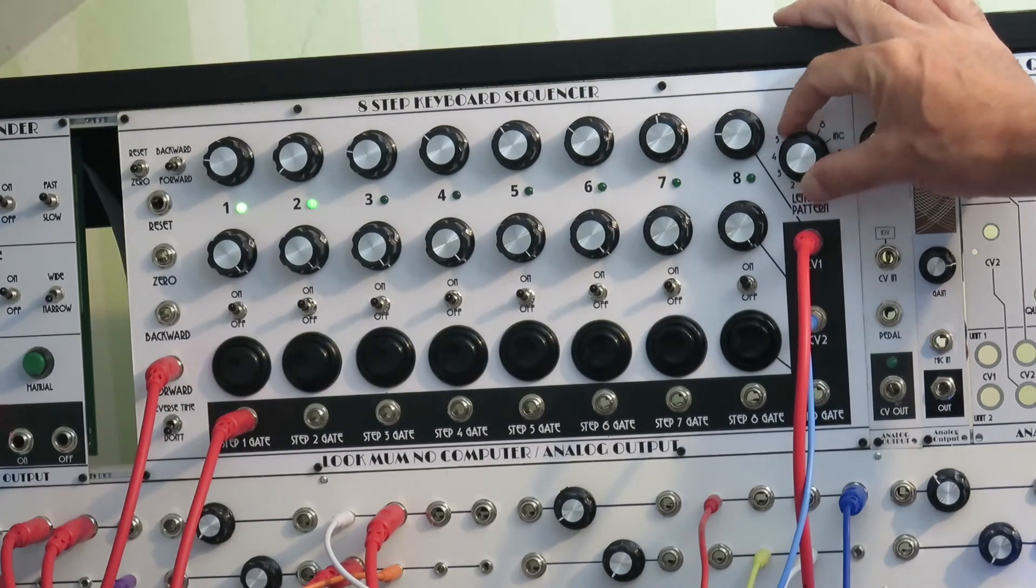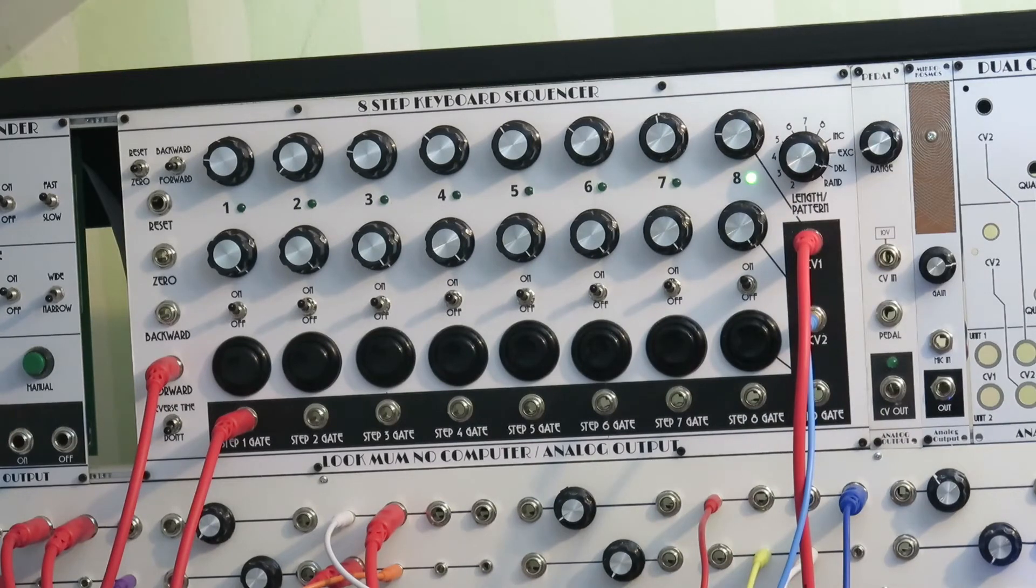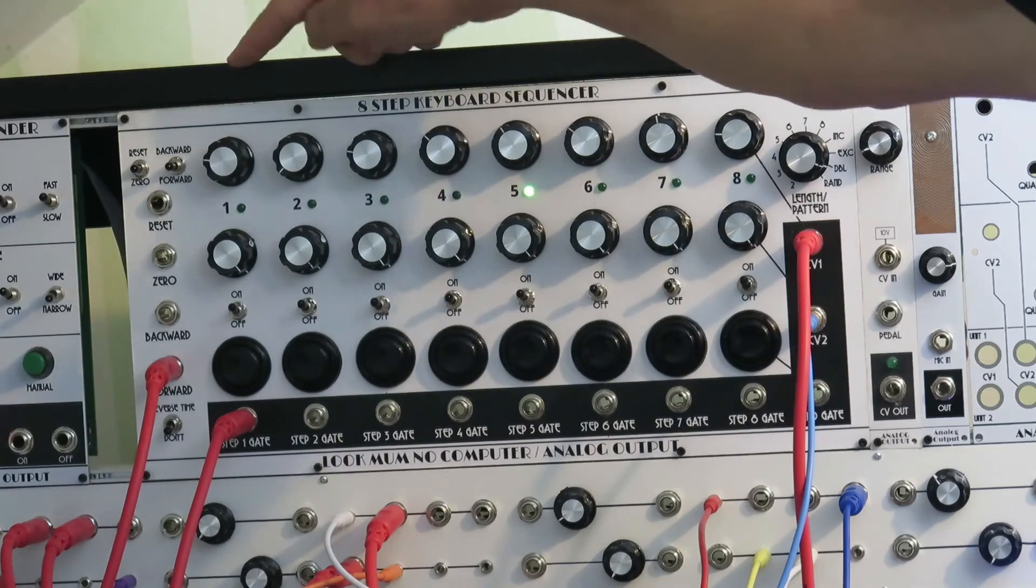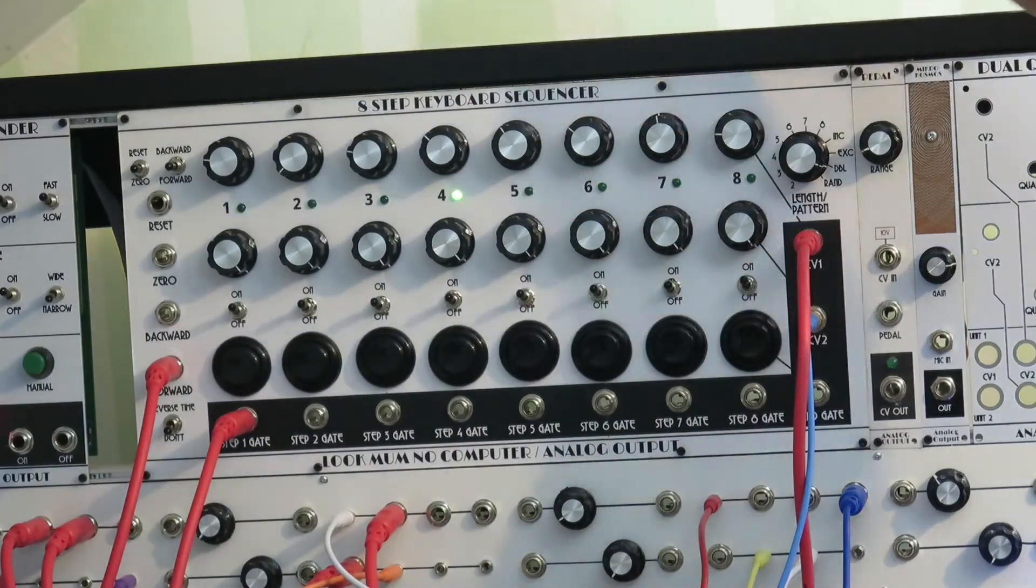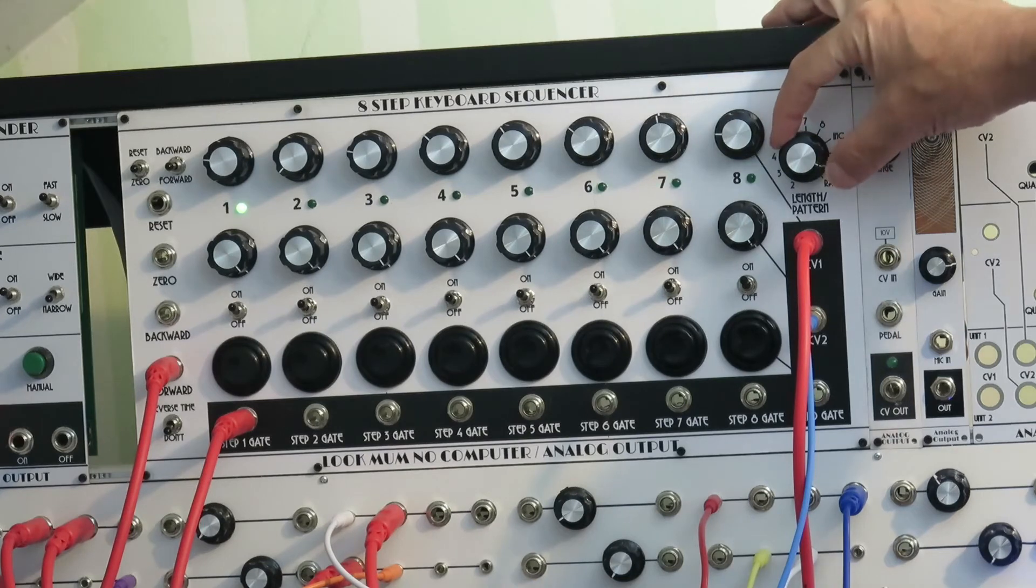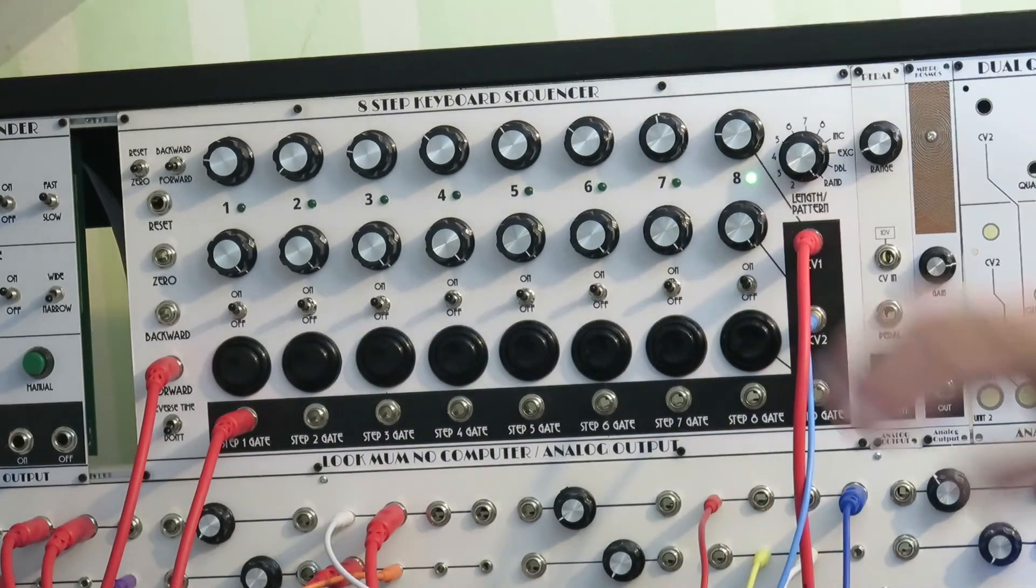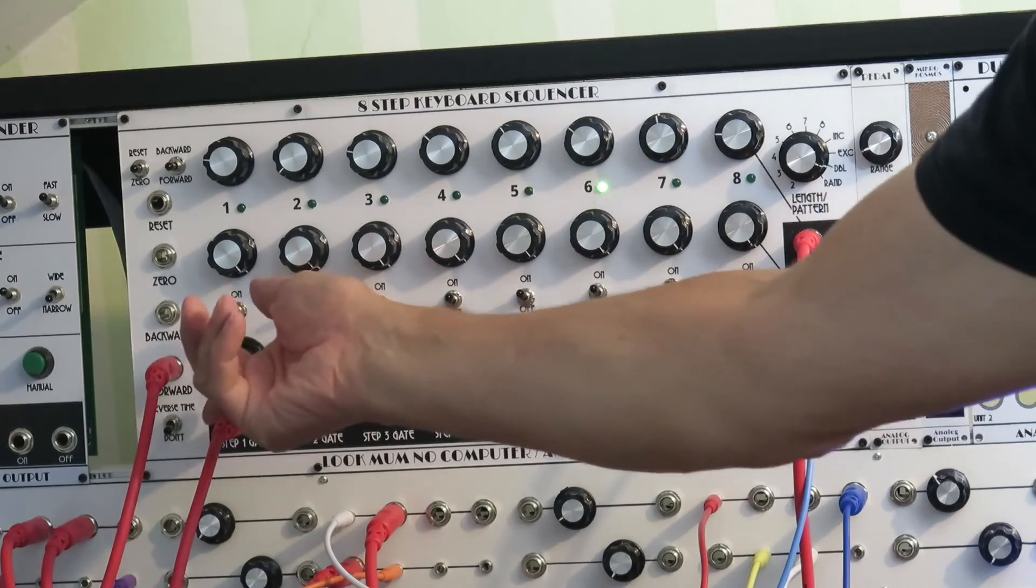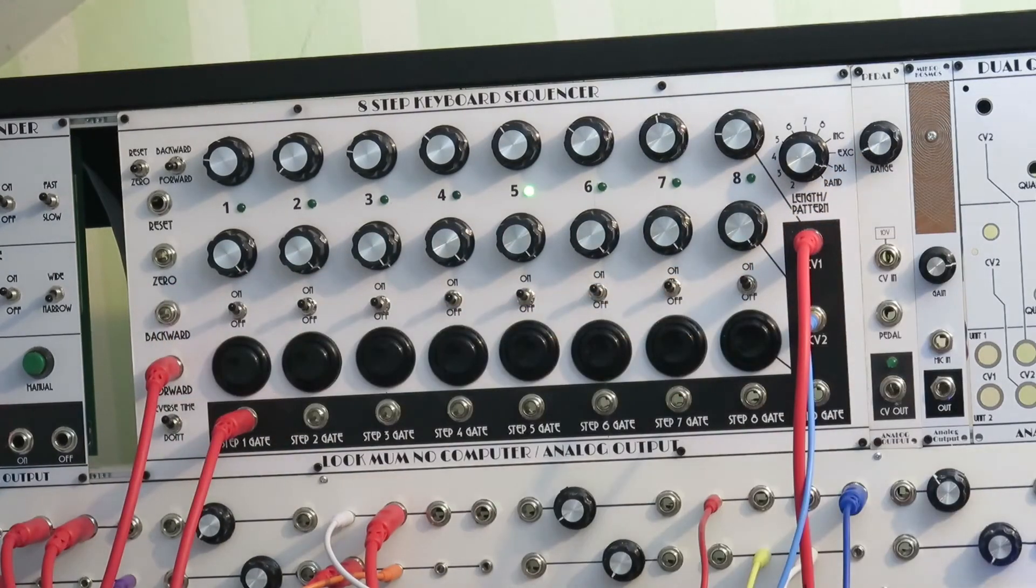Next position is double, which gives you two steps, two gates at each of the positions. And the final one is called Rand, and that just randomly picks the step to put out.